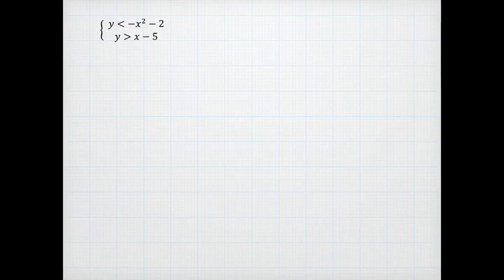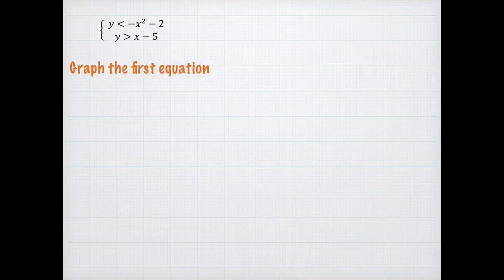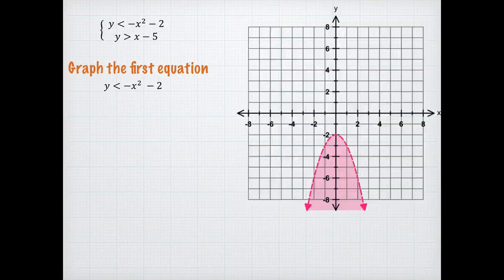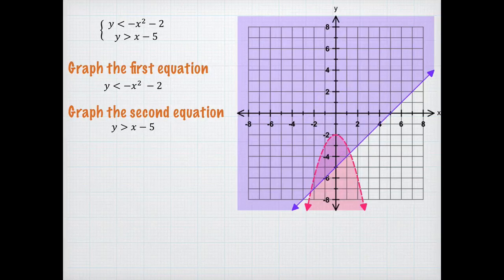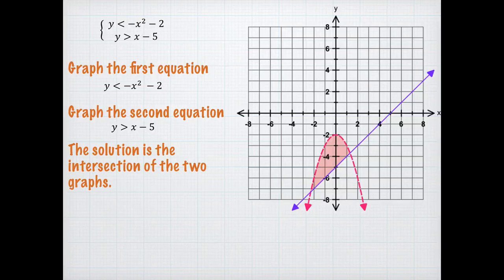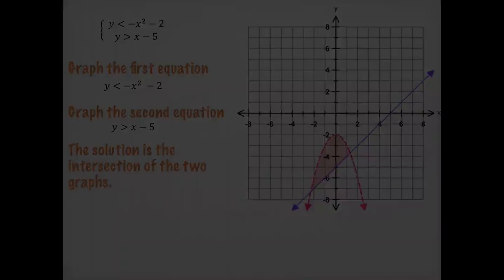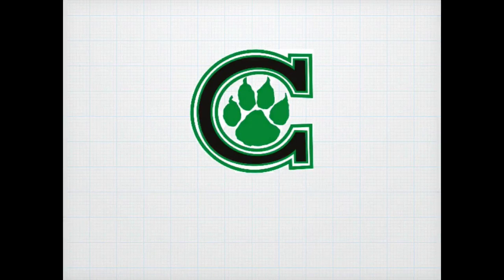You can do this with any system of inequalities — two or more. In this case, I'm going to graph the first equation, which is y less than negative x squared minus 2. That's a parabola. I'm going to graph the second equation, which is y greater than x minus 5. The solution is the intersection, which is the darker pink right there. That's how you solve a system of inequalities. We'll have some problems for you to practice with.